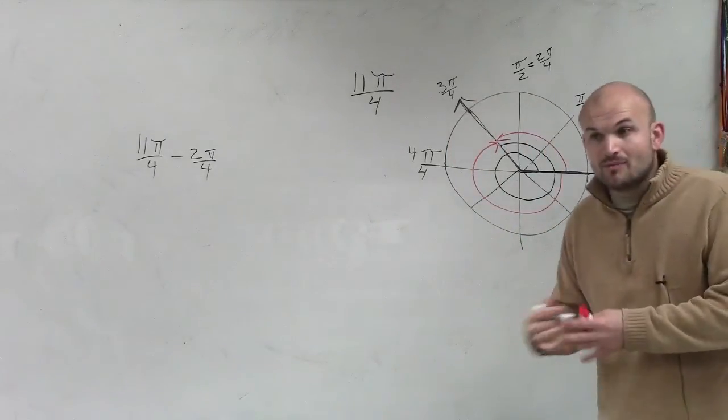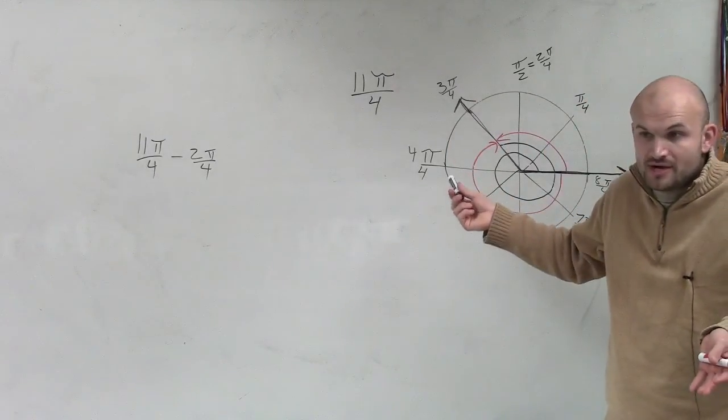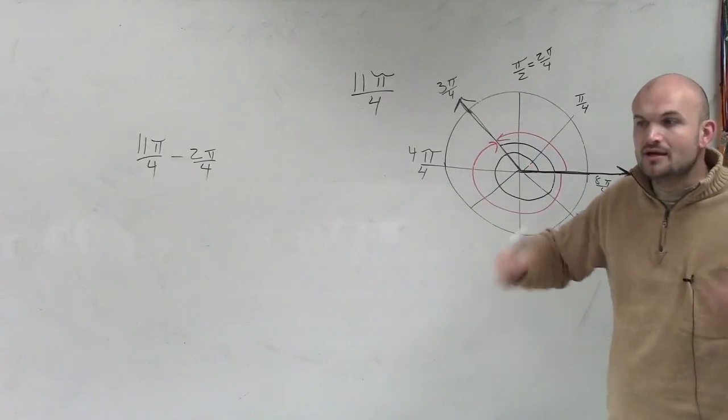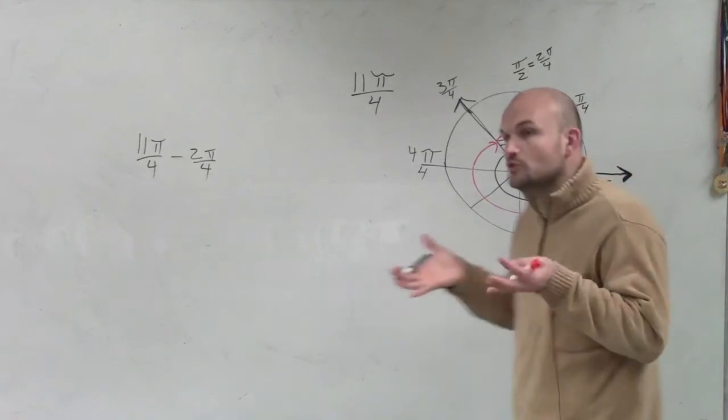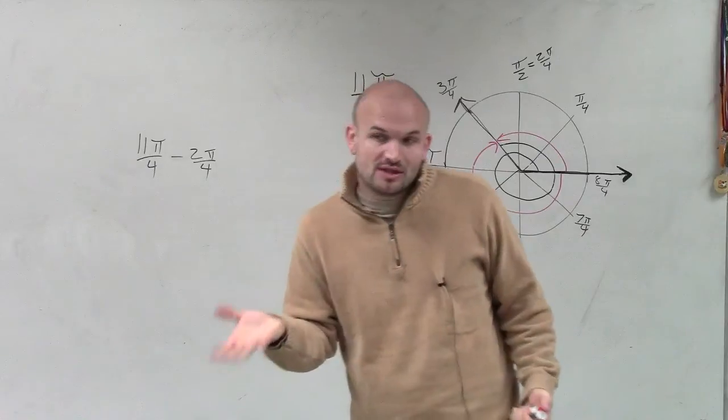So you didn't get a coterminal angle wrong, but obviously there's infinite many coterminal angles, right? You can add 2 pi infinite many times. So to constrict kind of our solution base, we like to ask for the smallest positive and negative.